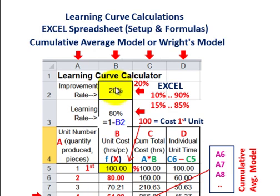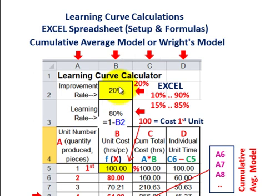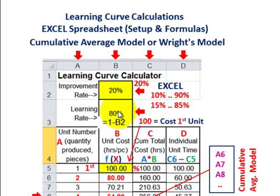For example, using 20% as the improvement rate. If you have a 10% improvement rate, that gives you a learning rate of 90%, and so forth. You enter your improvement rate, and then the learning rate in column B row three is going to be based off that — you put in equal sign 1 minus B2. So 1 minus 20% gives us 80%, and 1 minus 10% gives you 90%.